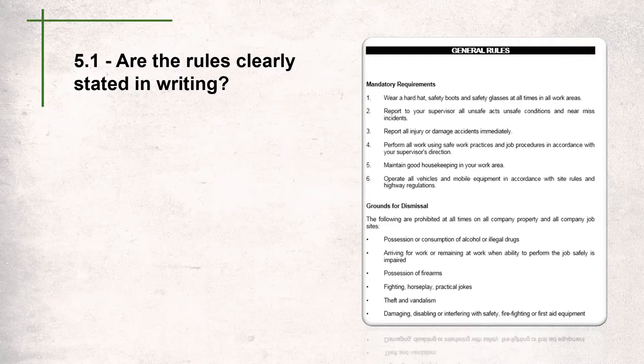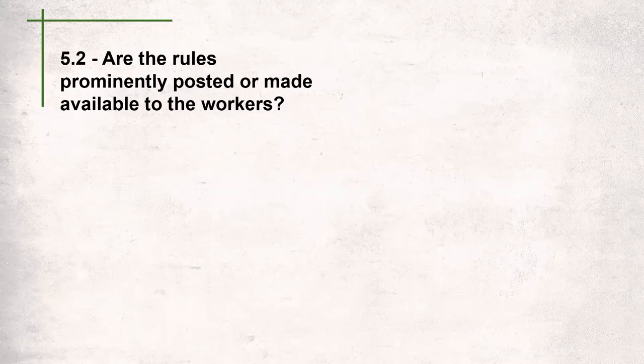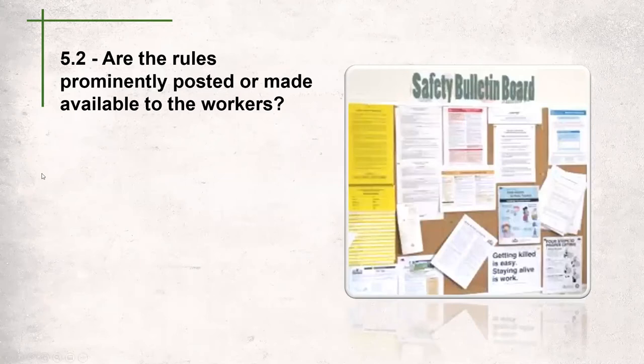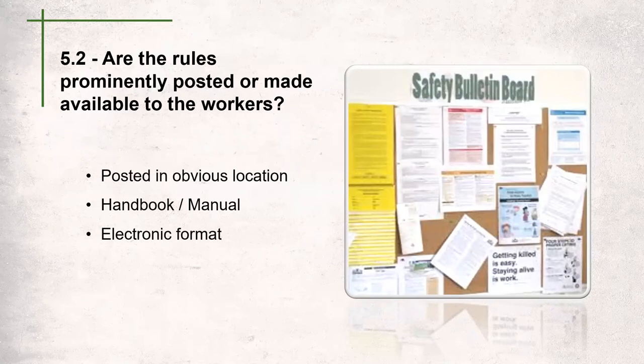The guideline for this section states that the auditor must see a written list of company rules. The next question is: are the rules prominently posted or made available to workers? This requirement is often met by posting the rules in an obvious location like a safety board, job trailer, or lunchroom. The requirement can also be met by making rules available through a handbook, manual, or electronic format — if workers have access on their phones or a computer, that meets the requirement as well.